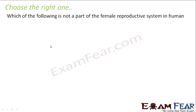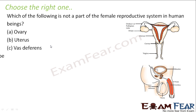Which of the following is not a part of the female reproductive system in humans? Ovary, uterus, vas deferens, or fallopian tube? If you look at the human female reproductive system, ovary, uterus, and fallopian tube are all part of it. But vas deferens is the tube which carries the sperms in the male reproductive system. So the correct answer would be vas deferens.